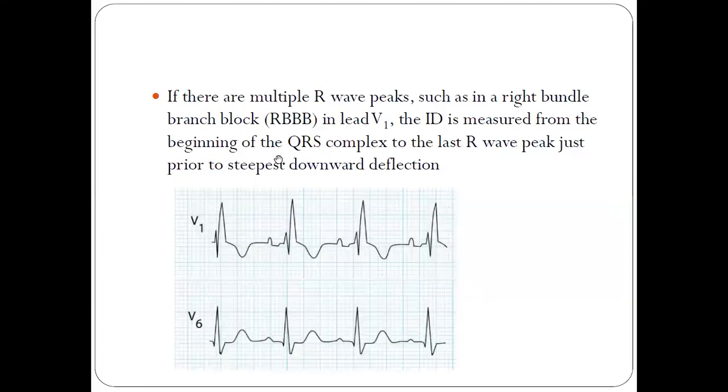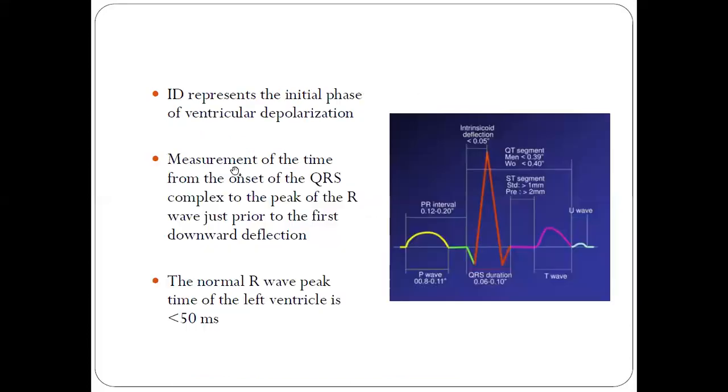If a patient has a right bundle branch block, there will be multiple R waves. In this case, intrinsicoid deflection should be calculated from the start of QRS to the peak of the second R wave, not the first R wave. You take the last R wave, whichever is there, the peak of R wave, and measure the intrinsicoid deflection.